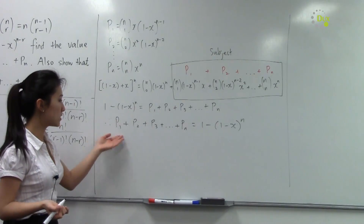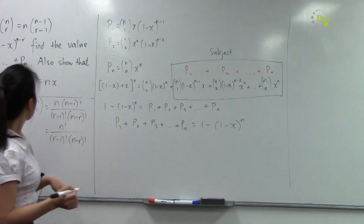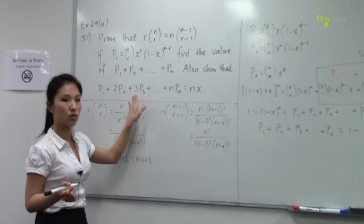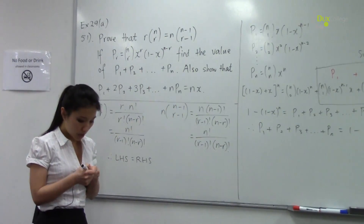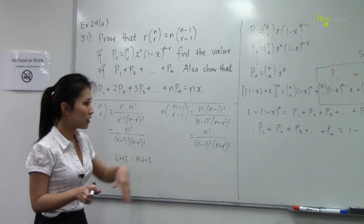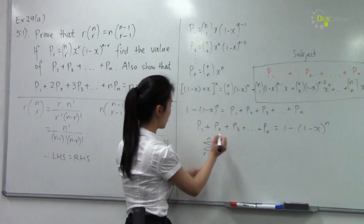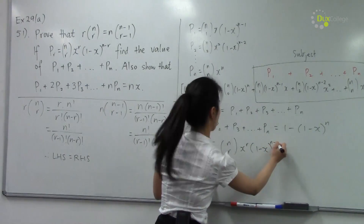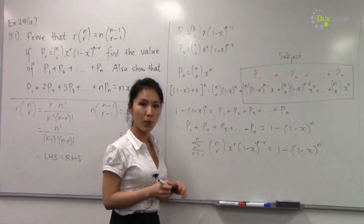Now for part three, the hardest part: we need to prove that p1 + 2p2 + 3p3 + ... + n·pn = nx. I'll introduce sigma notation as a more elegant way to write the solution. We express p1 + p2 + ... + pn in sigma notation, then differentiate both sides with respect to x.